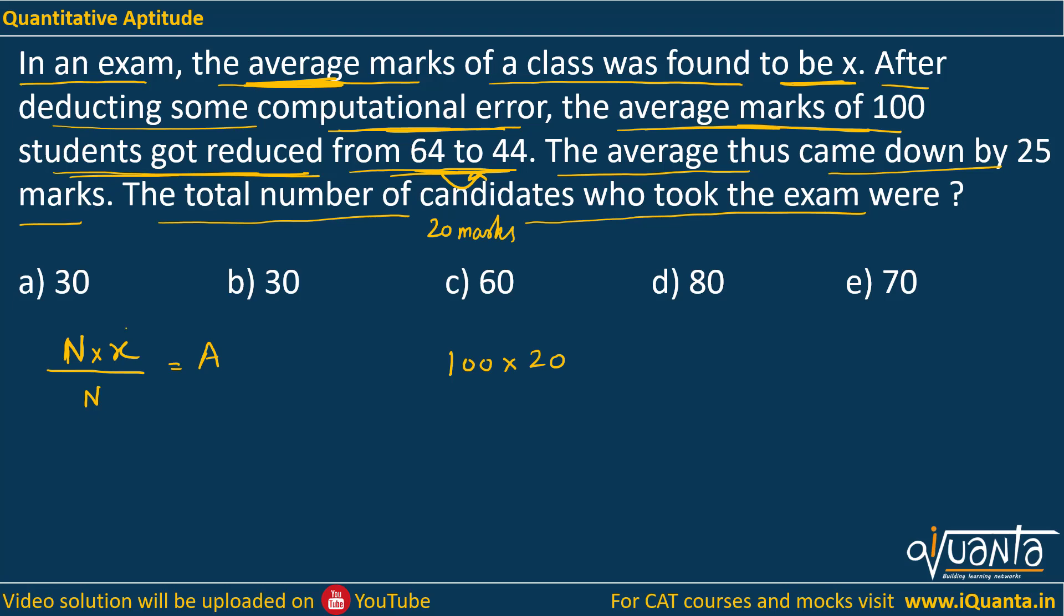Total marks earlier was N into x. So Nx minus this is the total reduction, but still the number of students is same. So we will divide this by N. This will be the new average, and this average has come down by 25 from the average earlier. So new value of average will be A minus 25.